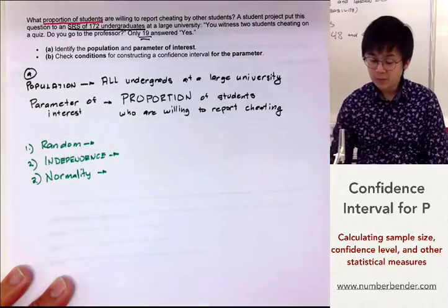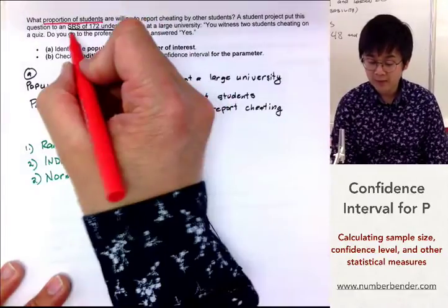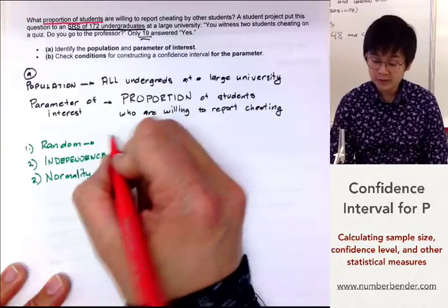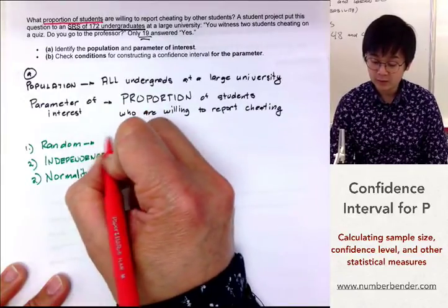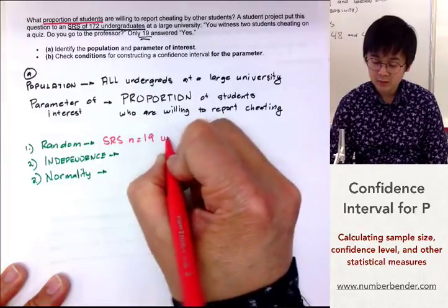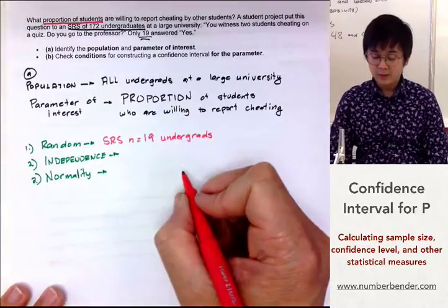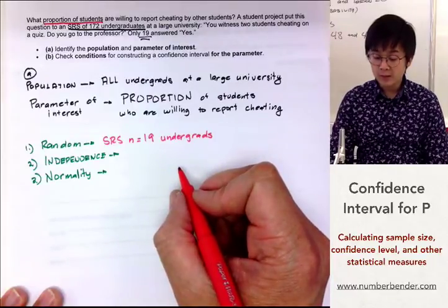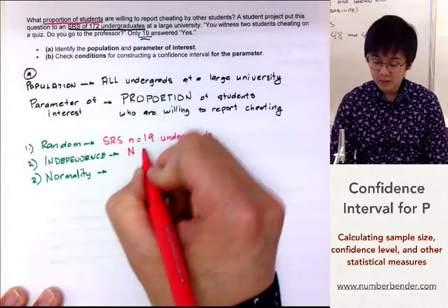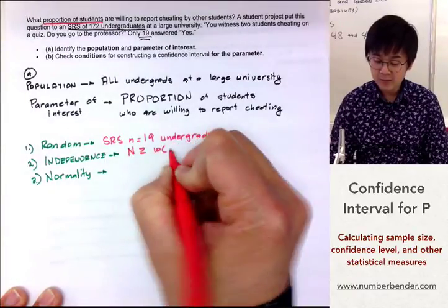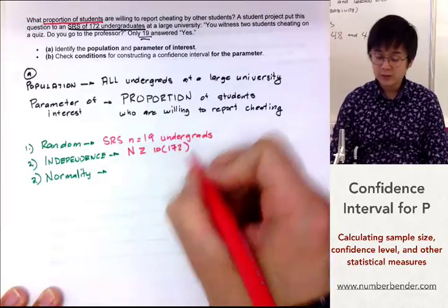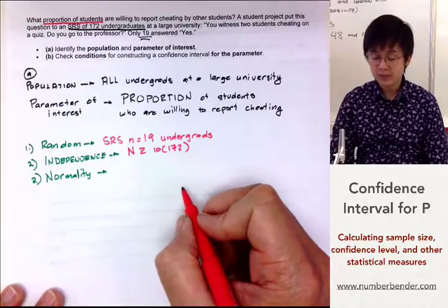For randomness, we have an SRS of 172 undergraduates, so that condition is already satisfied. For independence, since the population is all students at a large university, we can assume that the population is greater than 10 times the sample size of 172. These two conditions are easy to satisfy.